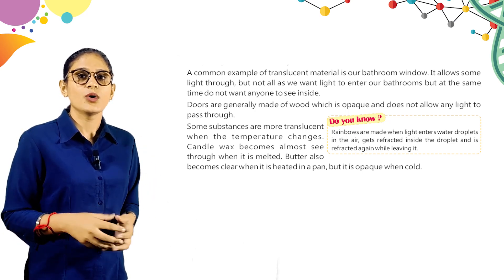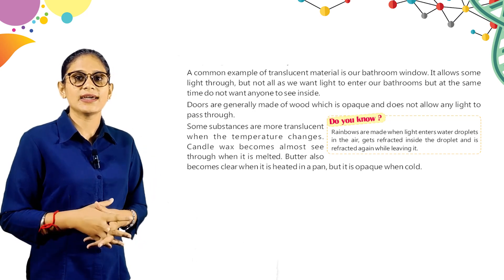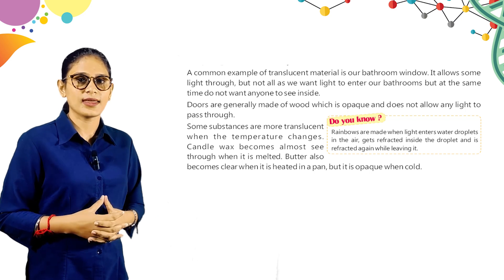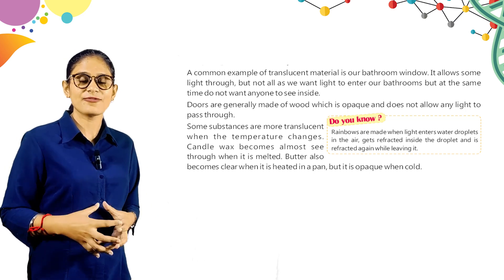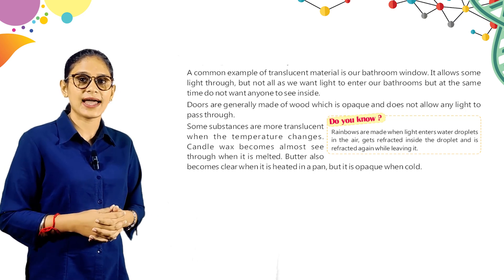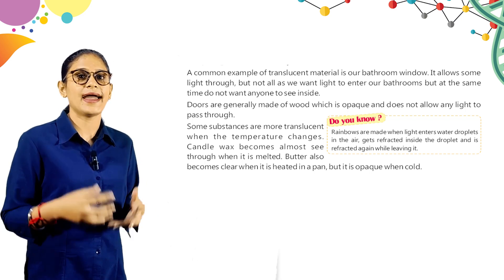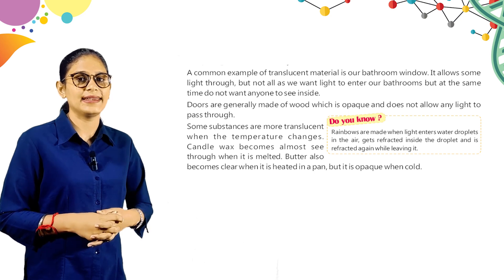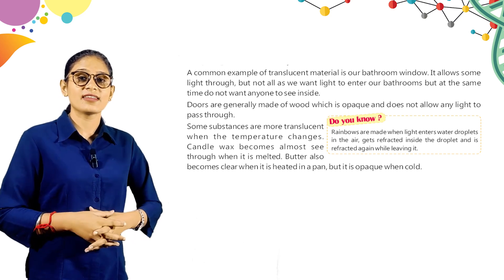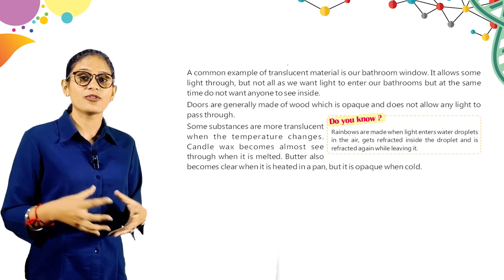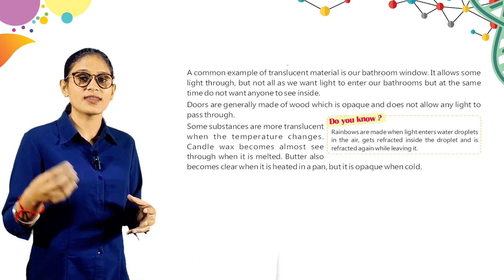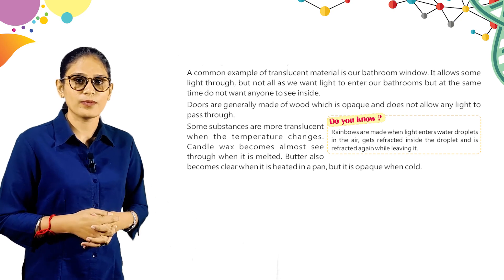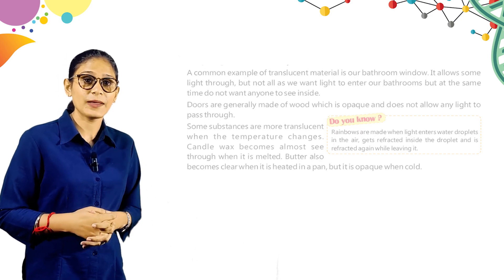Rainbows are made when light enters water droplets in the air, gets refracted inside the droplet, and is refracted again while leaving it. A rainbow forms when light refracts through water droplets in the air.